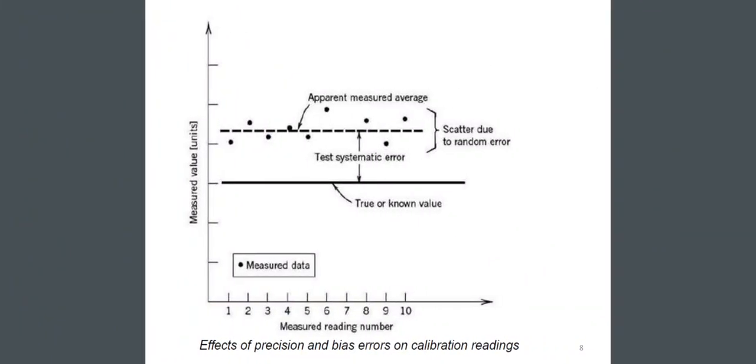Look at this. This is a figure of effects of precision and bias errors on calibration readings. In the x-axis, there is measured reading number, and in the y-axis, there is measured value in units. Look at the measured data, true or known value test, systematic error, and the apparent measured average is scattered due to random error.